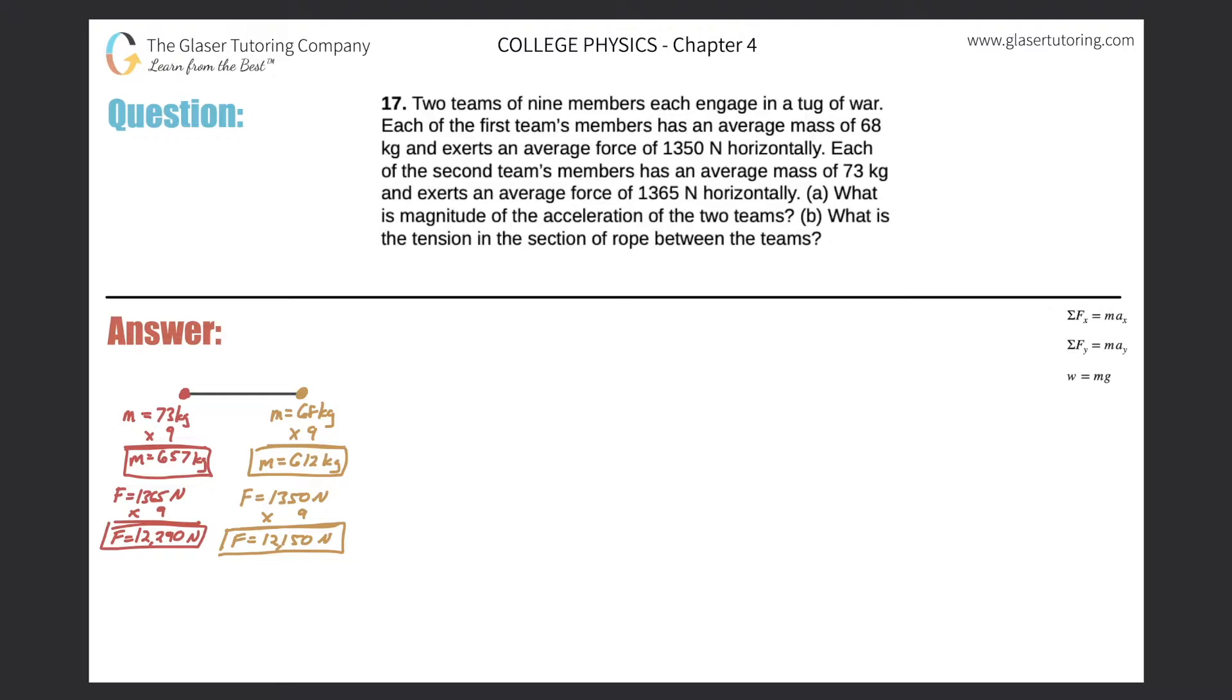Number 17. Two teams of nine members each engage in a tug-of-war. Each of the first team's members has an average mass of 68 kilograms and exerts an average force of 1,350 newtons horizontally. Each of the second team's members has an average mass of 73 kilograms and exerts an average force of 1,365 newtons horizontally. Letter A, what is the magnitude of the acceleration of the two teams? Letter B, what is the tension in the section of the rope between the two teams?